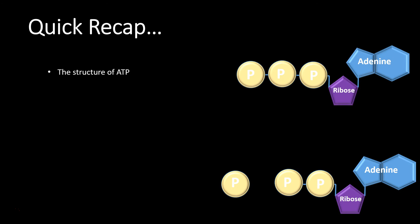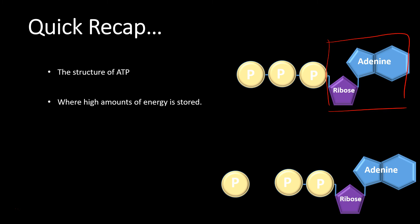Let's do a quick recap. We know the structure of ATP: adenosine with three phosphates attached. We know where high amounts of energy are stored: between the second and third phosphate, in that bond. We know how energy is released: when the third phosphate group breaks off, leaving ADP and a phosphate. And we know how it's recycled: we eat food and glucose, that energy gets restored between the second and third phosphate, and we're back to ATP.